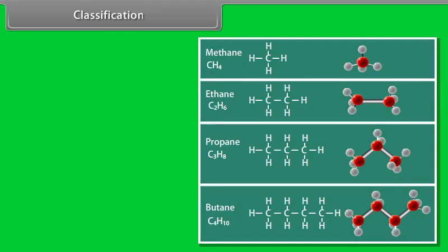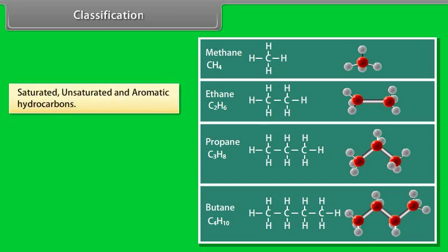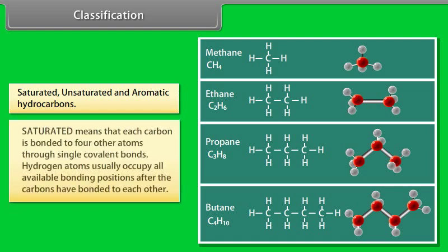Depending upon the types of carbon-carbon bonds present, hydrocarbons can be classified into three main categories: saturated, unsaturated and aromatic hydrocarbons. Saturated means that each carbon is bonded to four other atoms through single covalent bonds. Hydrogen atoms usually occupy all available bonding positions after the carbons have bonded to each other.